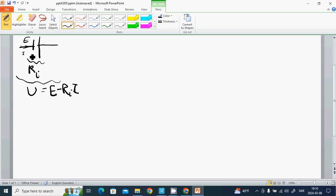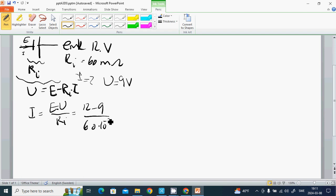The example for that is a car accumulator has an EMF of 12 volts and Ri equals 60 milliohms. What is the current if U is maximum 9 volts? Then we put it here: I equals E minus U divided by Ri, which is 12 minus 9 divided by 60 times 10 to the negative 2, and it is 50 amperes.